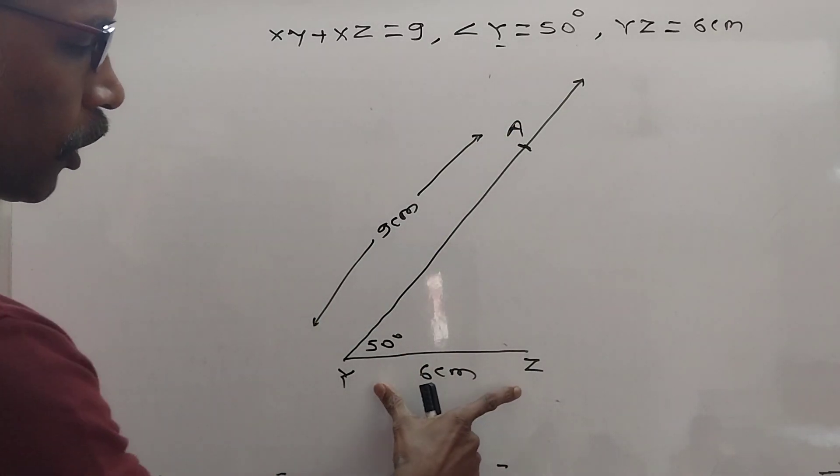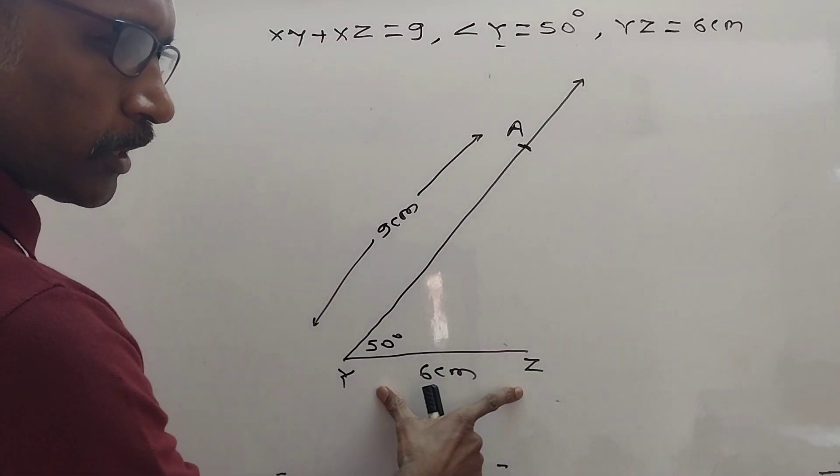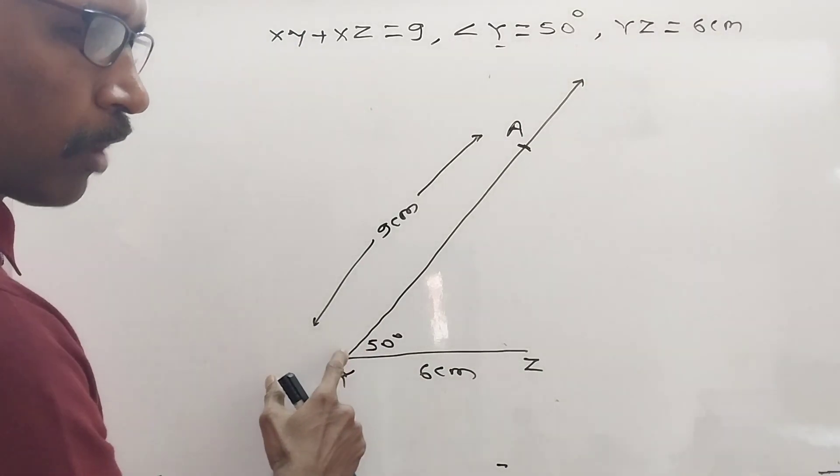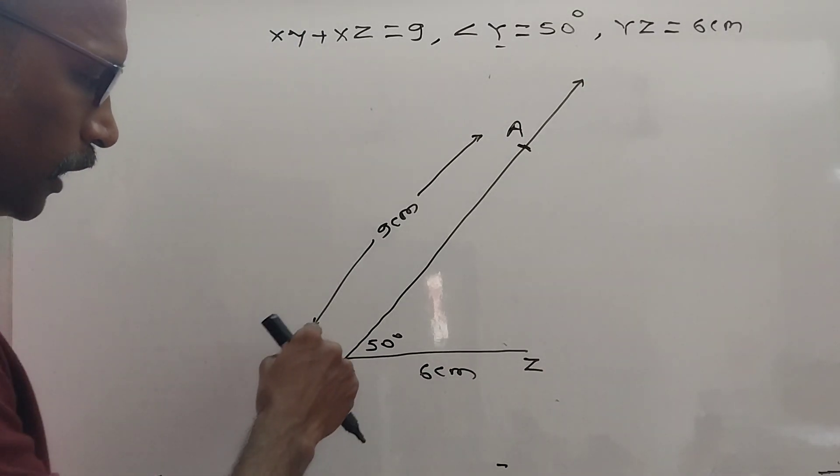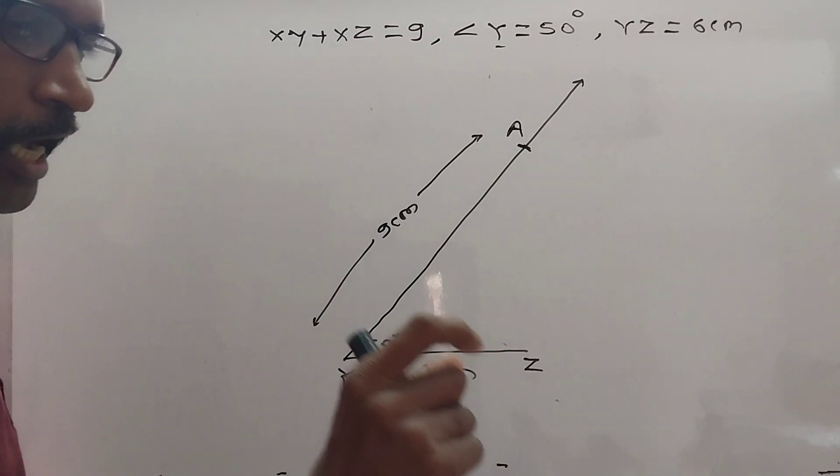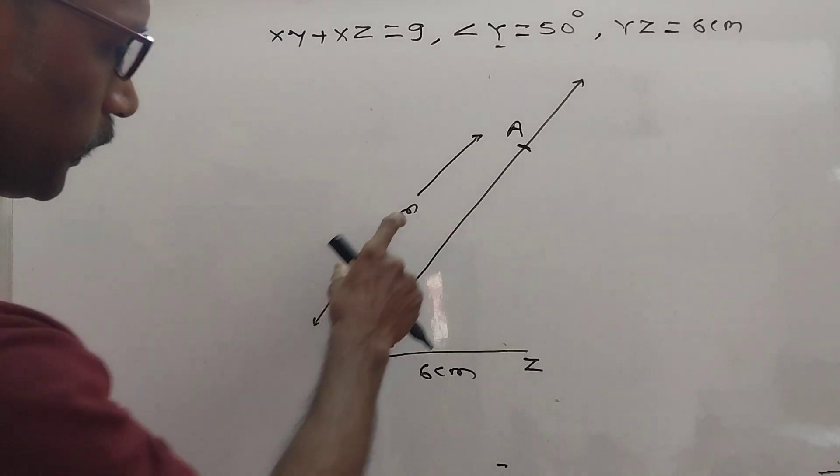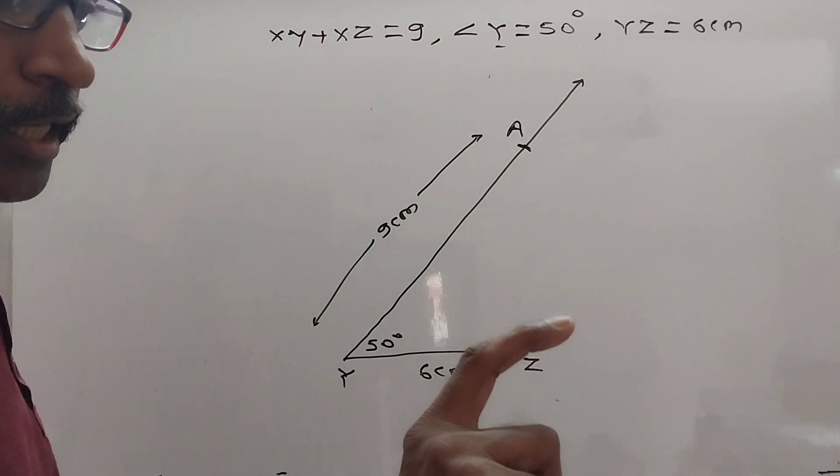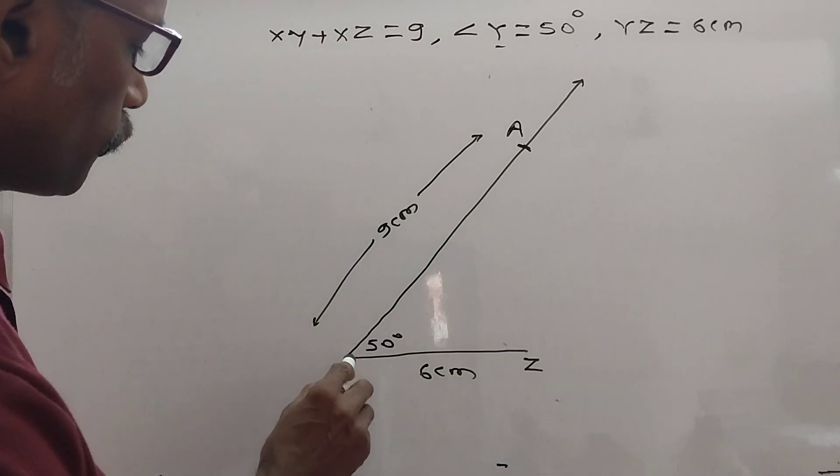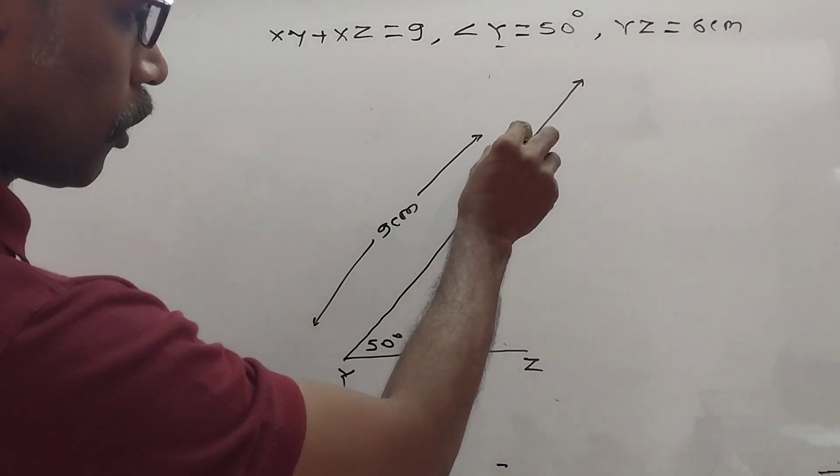First draw YZ of 6 cm, then measure angle Y 50 degrees and draw ray as long as possible. Then take 9 cm on compass and keep point active on Y and draw arc.